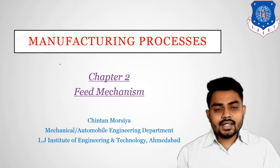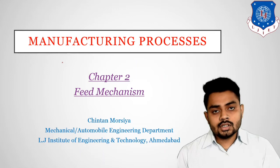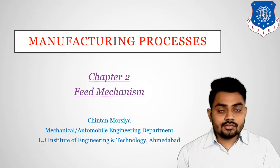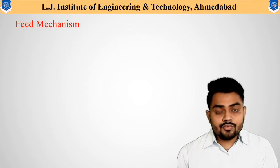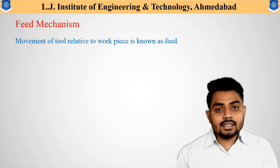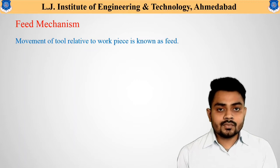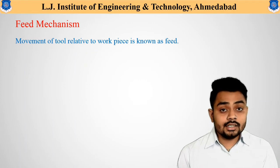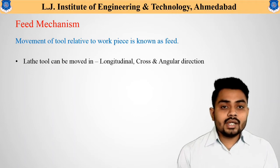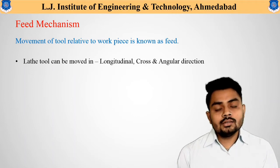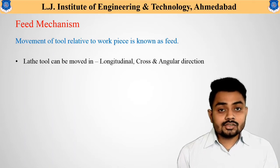Hello students, today in this lecture we will discuss different types of feed mechanisms. First, let us understand the meaning of feed. Feed is the relative movement of the tool with the workpiece. There are different types of movements available for the tool: it may be a longitudinal movement, a crosswise movement, or an angular movement.